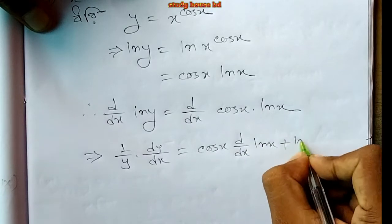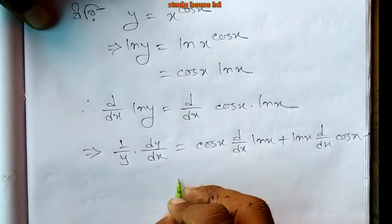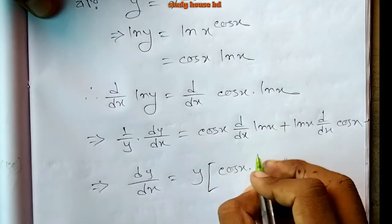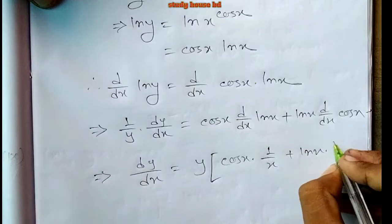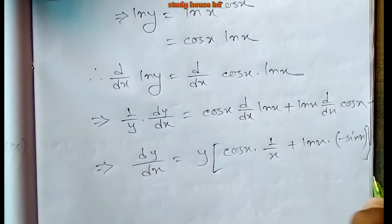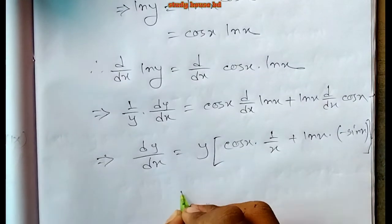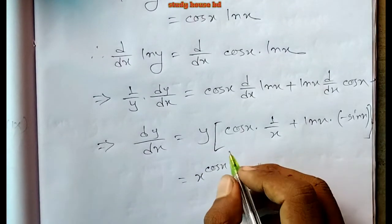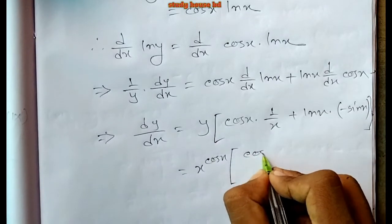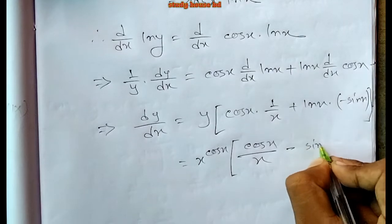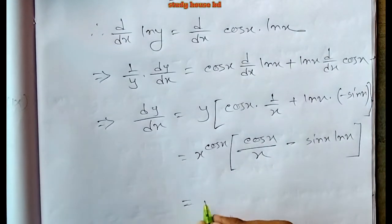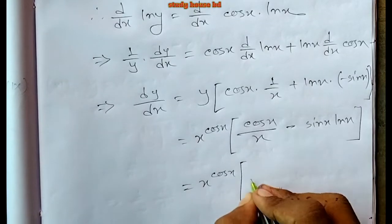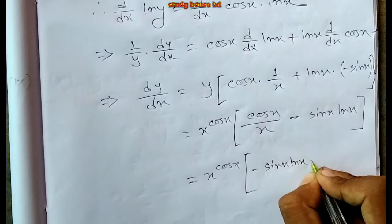We have ln x plus ln x times d/dx of cos x. Dividing both sides by dx and by y: cos x times d/dx of ln x gives one over x, plus ln x times d/dx of cos x, which is minus sin x. So y equals x to the power cos x. The answer is x to the power cos x times (minus sin x times ln x plus cos x over x).